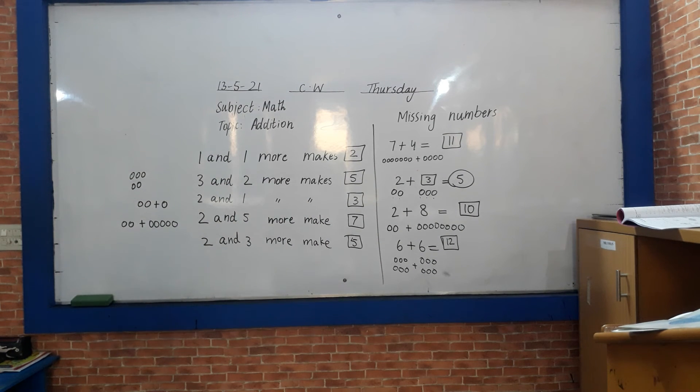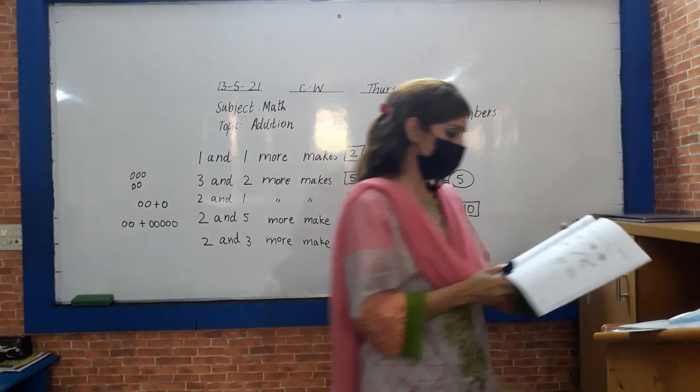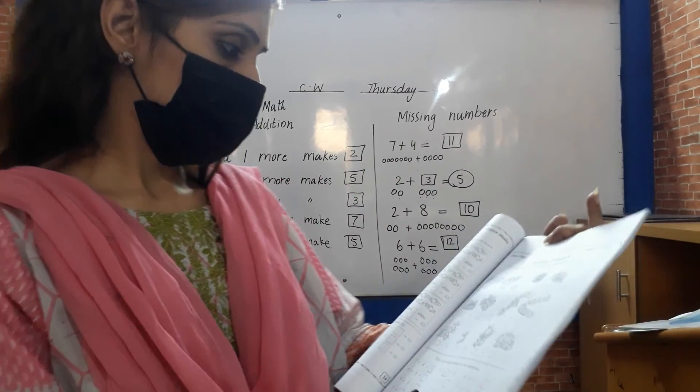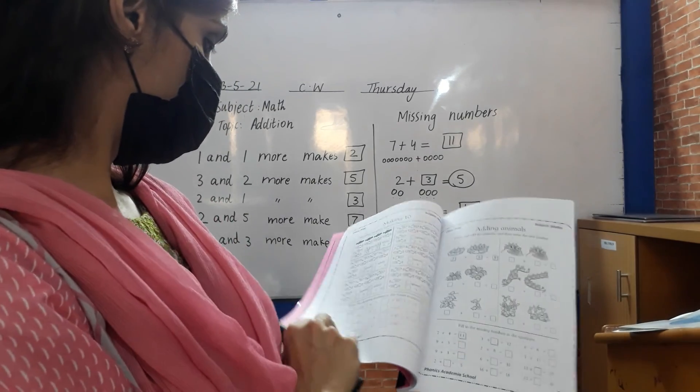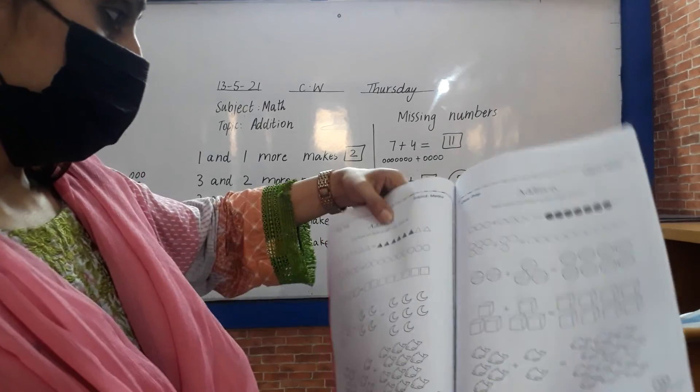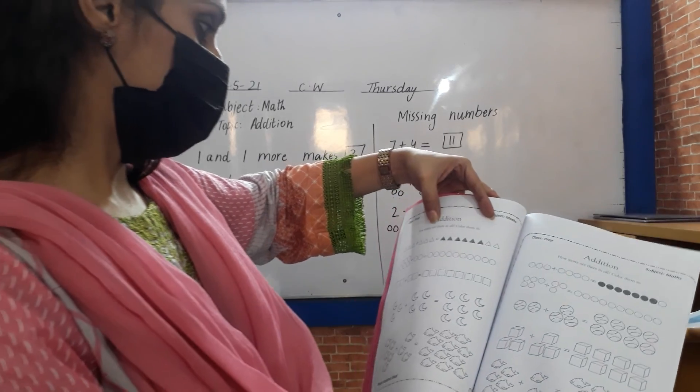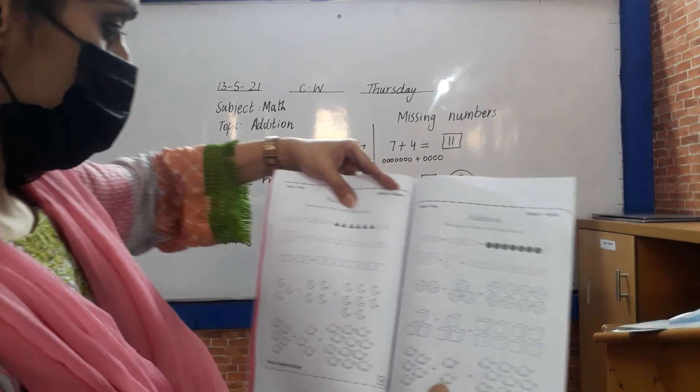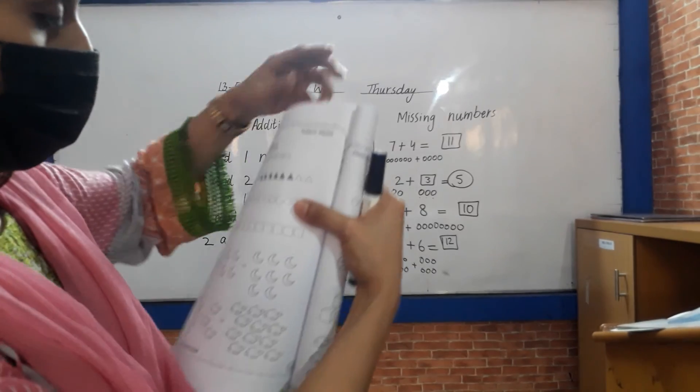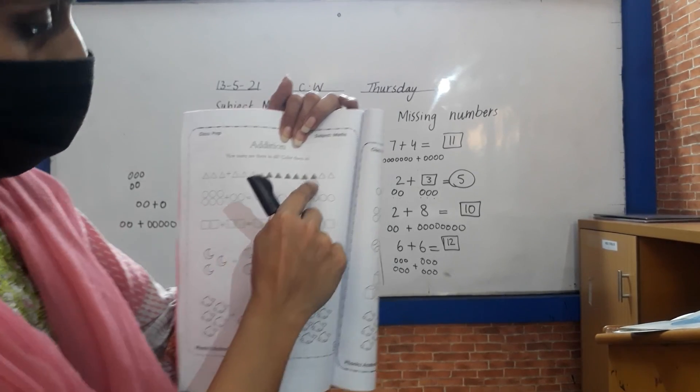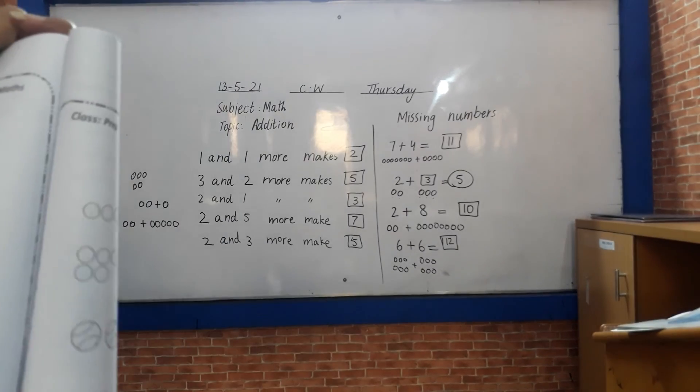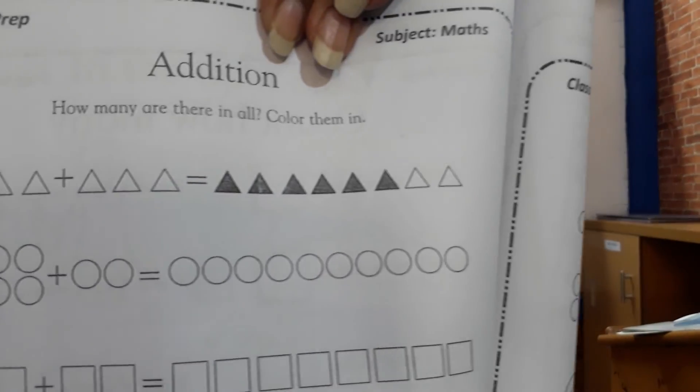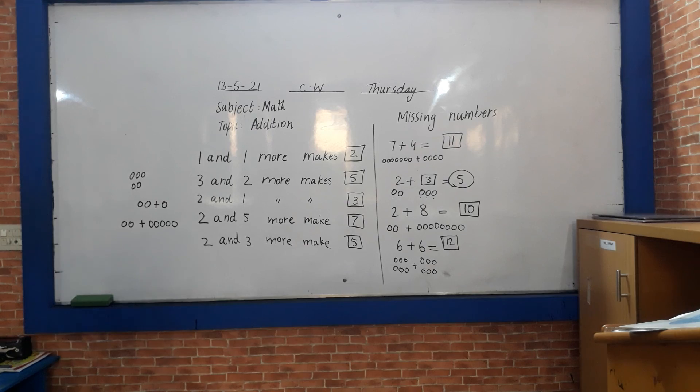These are addition sums. Count it nicely and write in a proper way. You have to count it like this. How many are there in all? You have to count one, two, three, four, five, six. So how many do you count? One, two, three, four, five, six. You have to color only six. Do colors neatly and nicely. This is your class book and you have to do it. See you tomorrow.